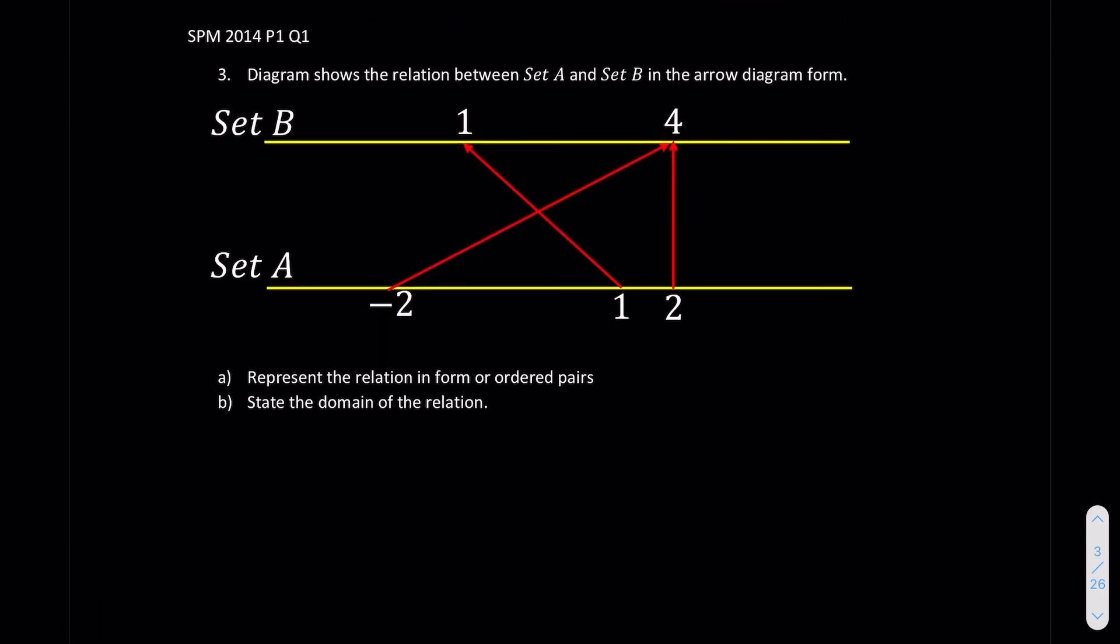Now we look at question number three. So this is a diagram showing the relation between set A and set B in terms of arrow diagram. We present the relation in terms of ordered pair. So if they want you to write down in the order pair, just remember that it also consists of set. And inside the order pair, we're going to put it inside of something like a coordinate form. Means that we are going to group the couple one by one. So the first couple that we have is negative two, four. So write it down, negative two, four. The second couple that we have is one, one. So we have one, one. The next couple that we have is two, four. So two, four.